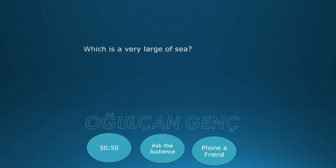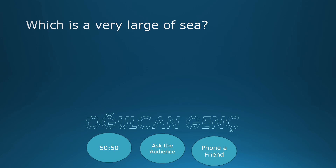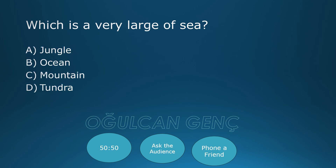Which is a very large body of water? Jungle, Ocean, Mountain, Tundra. Correct answer: Ocean, B.